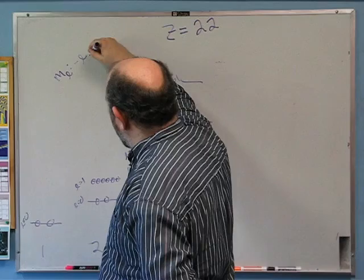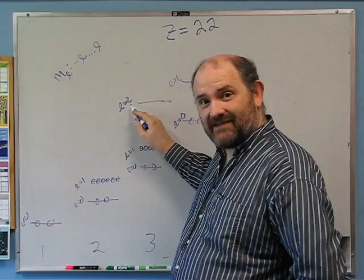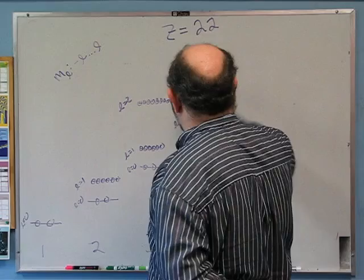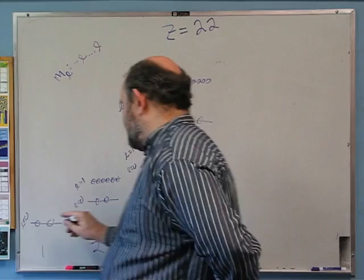Remember, M sub L, the z component, is anywhere from negative L up to positive L. So if L is 2, that means negative 2, negative 1, 0, 1, 2 — that's five possibilities. Two electrons per orbital because of the electron spin, so there are 10. I'm pretty sure at this point I've got enough.